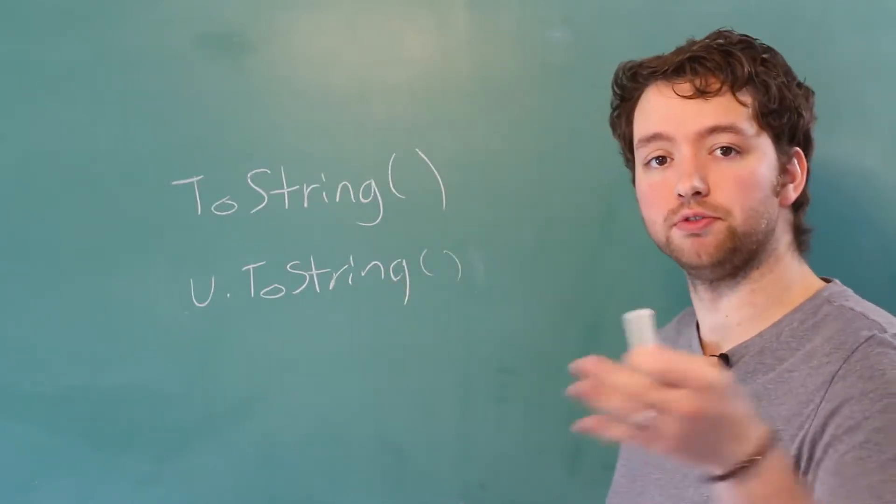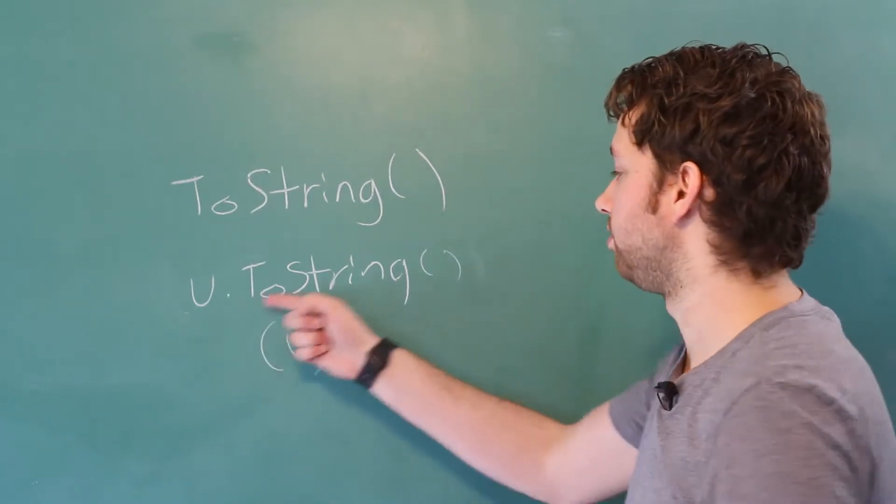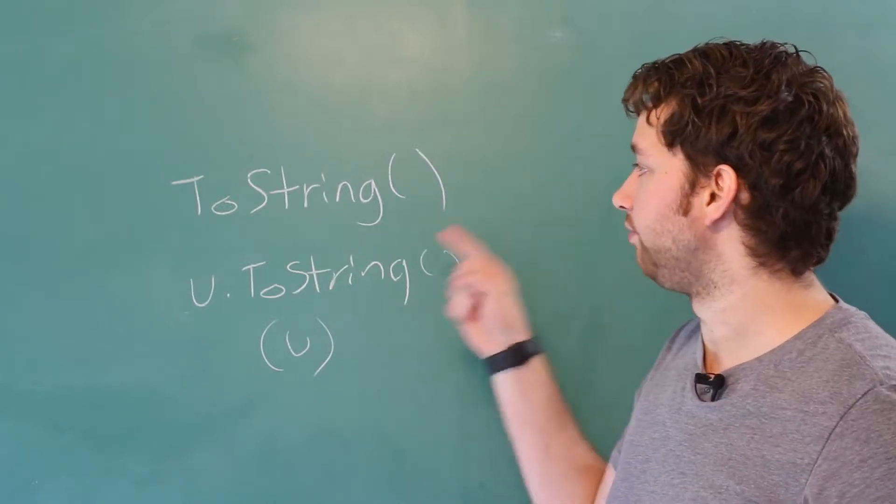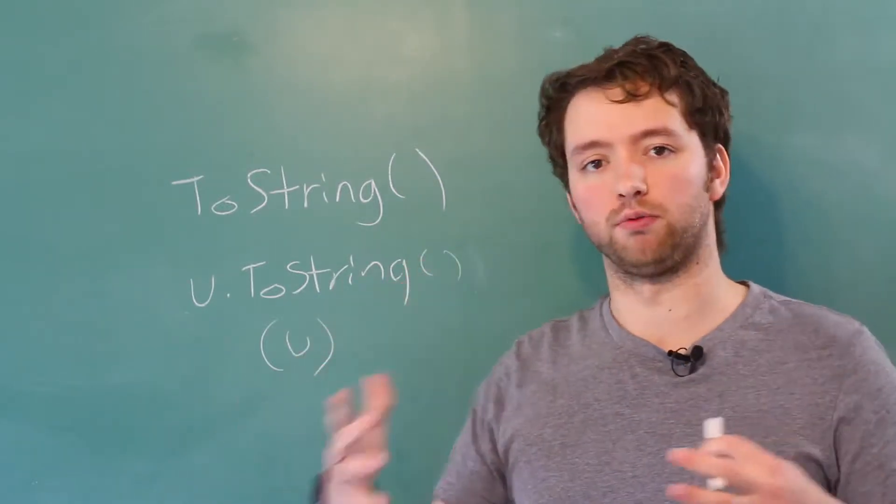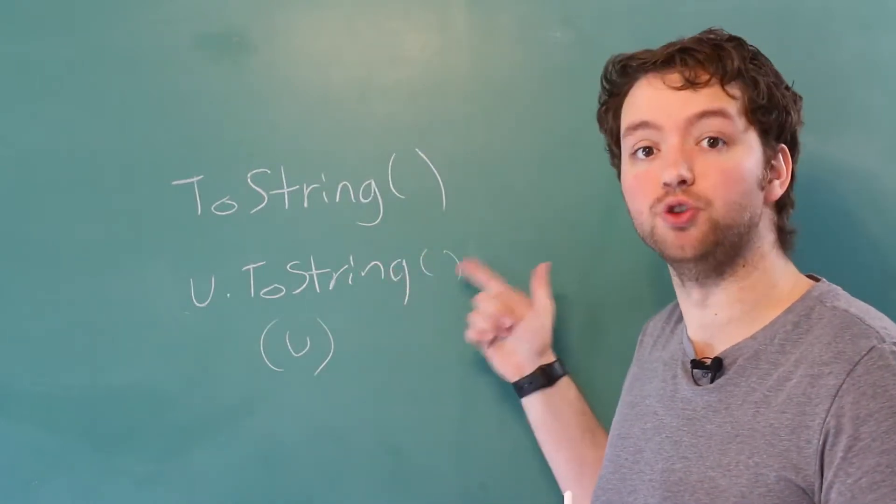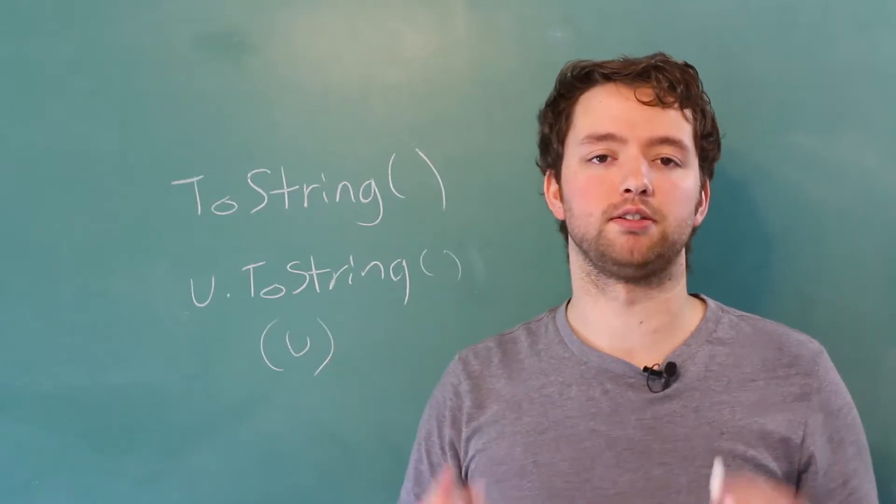When you do console dot write line and pass in an object, it's automatically going to call that toString method. So if we want to basically define how a method is going to work, such as one that already exists like toString, we can override it and create our own custom version.